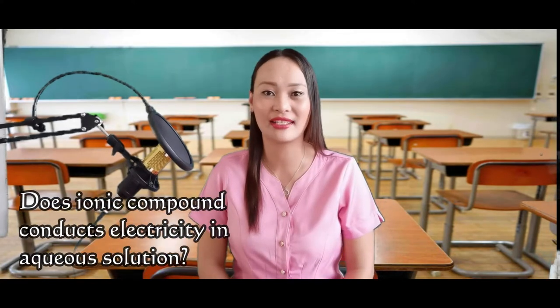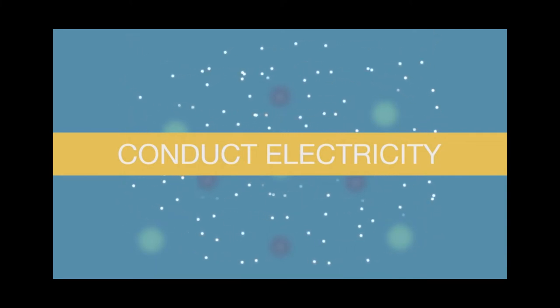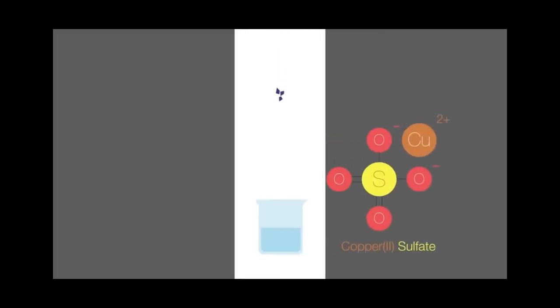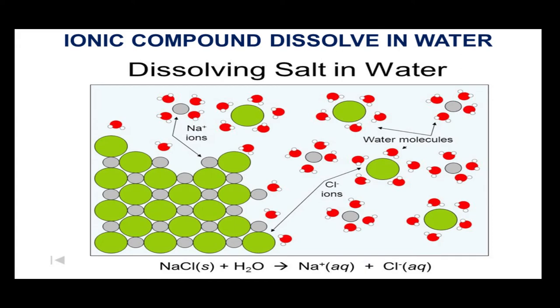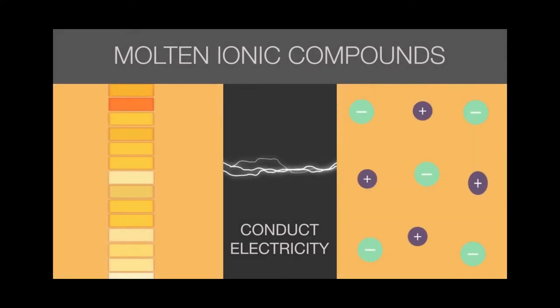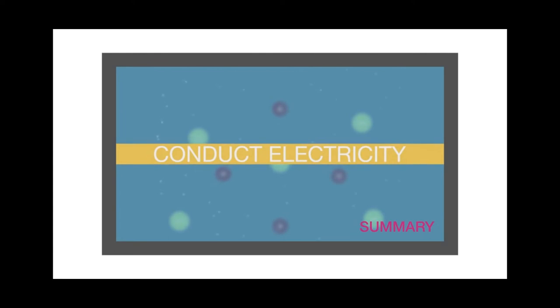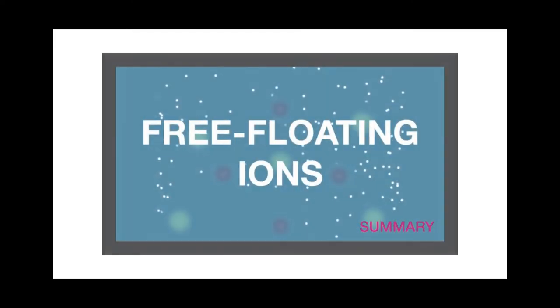Do you think ionic compounds conduct electricity in aqueous solution? Ionic compounds can conduct electricity when dissolved in water to form an aqueous solution. They separate into ions which can carry electricity in a solution. These ionic substances that conduct electricity are referred to as electrolytes. When an ionic compound like salt is dissolved in water, the ions break out individually into cations and anions. These ions are then free to move. When the electrodes are dipped into the salt solution, the cations flow into the negative electrodes while the anions flow into the positive electrodes, causing electricity to flow.